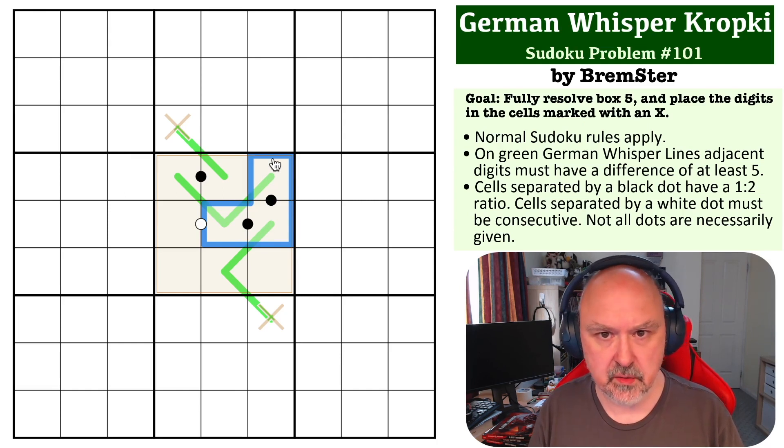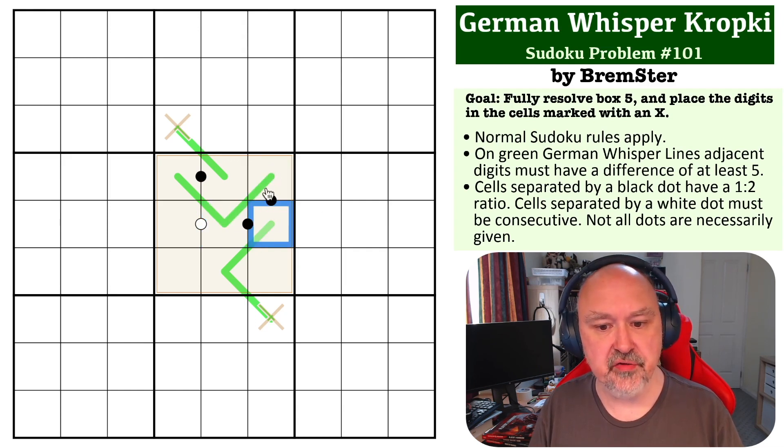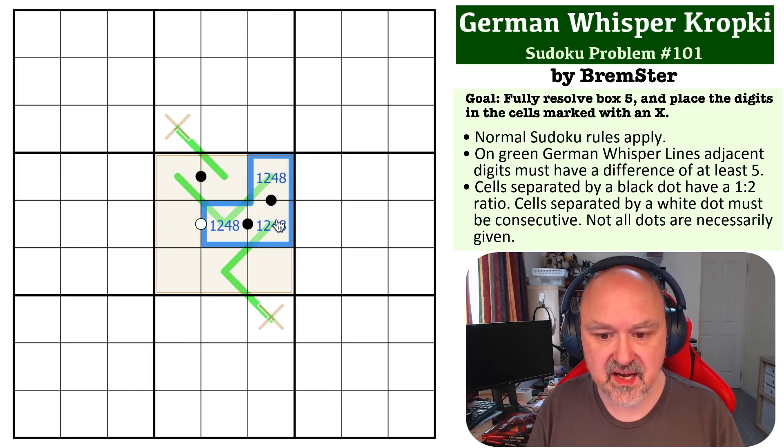3 and 6 can never go on a chain of three dots that see each other because they go 3-6-3 or 6-3-6, so that doesn't work. So these are 1, 2, 4, 8. If this was a 1, these would both be 2 - that doesn't work. If this was an 8, these would both be 4, but this is a whisper line so one of those has to be high.